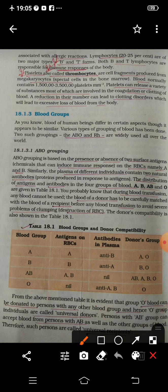Now, the distribution of antigen and antibody across the four blood groups — A, B, AB, and O — depends upon these two things: antigen and antibody.